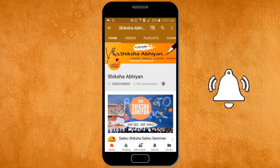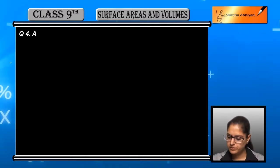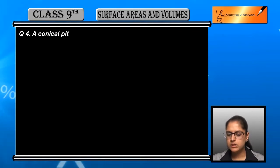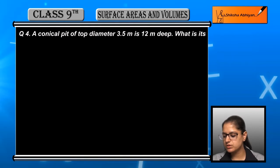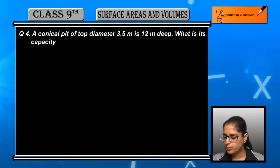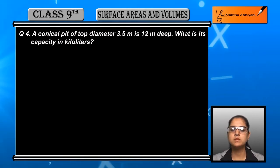Question number four: A conical pit of top diameter 3.5 meters is 12 meters deep. What is its capacity in kiloliters? Let us see.